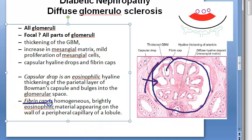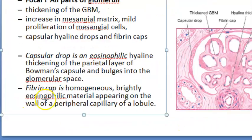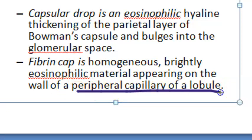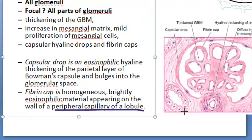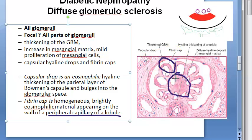The fibrin cap is a homogeneously brightly eosinophilic material appearing on the wall of the peripheral capillary of the lobule. So in summary for diffuse glomerulosclerosis: thickened glomerular basement membrane, increased mesangial matrix, proliferation of mesangial cells, capsular drop, and fibrin cap.